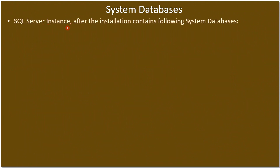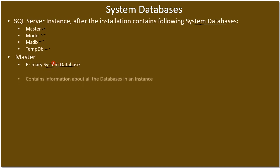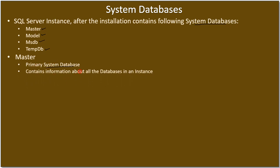A SQL Server instance after installation contains the following system databases: master, model, MSDB, and tempDB. Master is the primary system database — it gets installed when you install SQL Server. The master database contains information about all the databases, meaning if you install a user-defined database, information about that database will also be included in the master database.